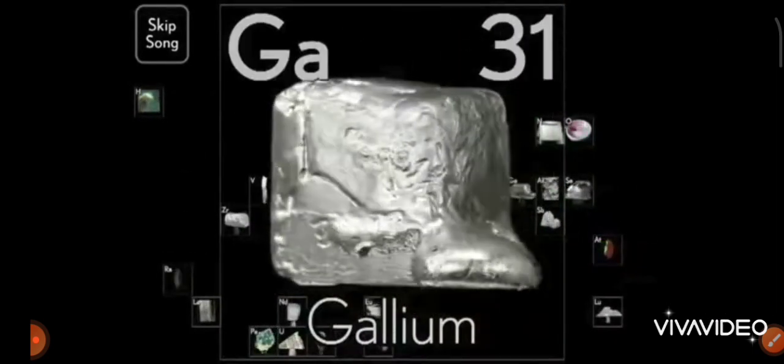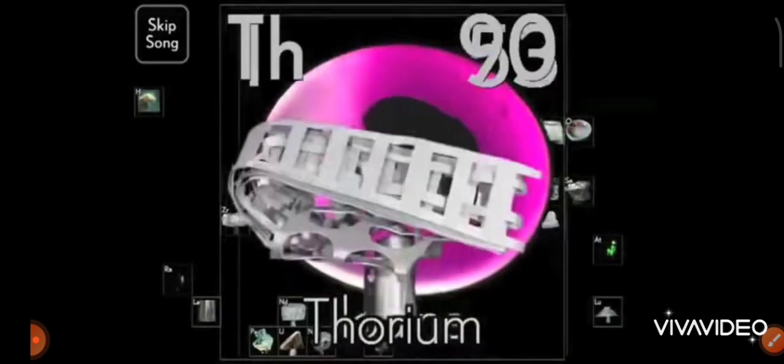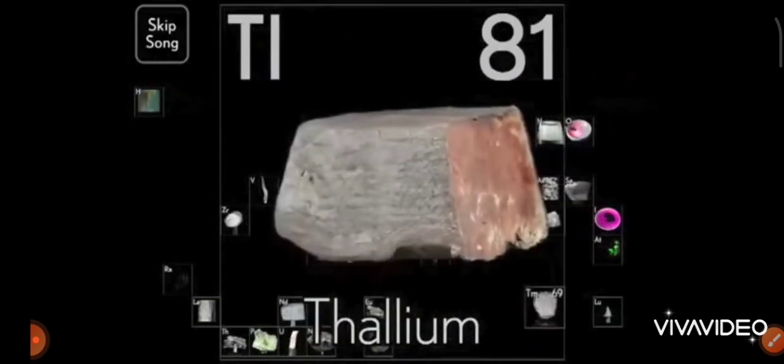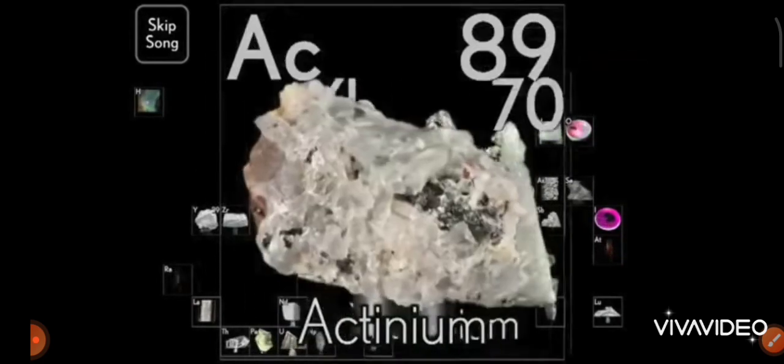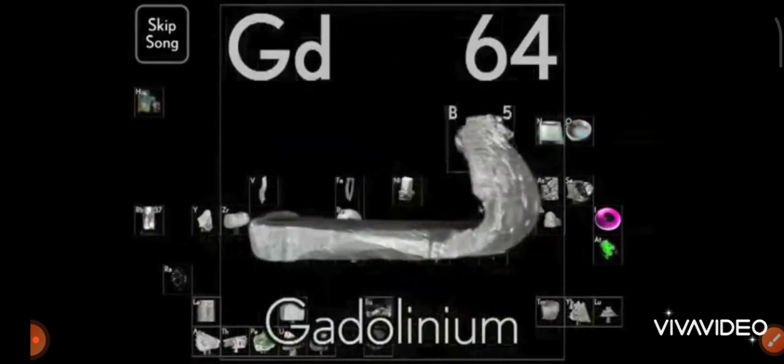Protactinium, and indium, and gallium, and iodine, and thorium, and thulium, and thallium. There's yttrium, ytterbium, actinium, rubidium, and boron, gadolinium.